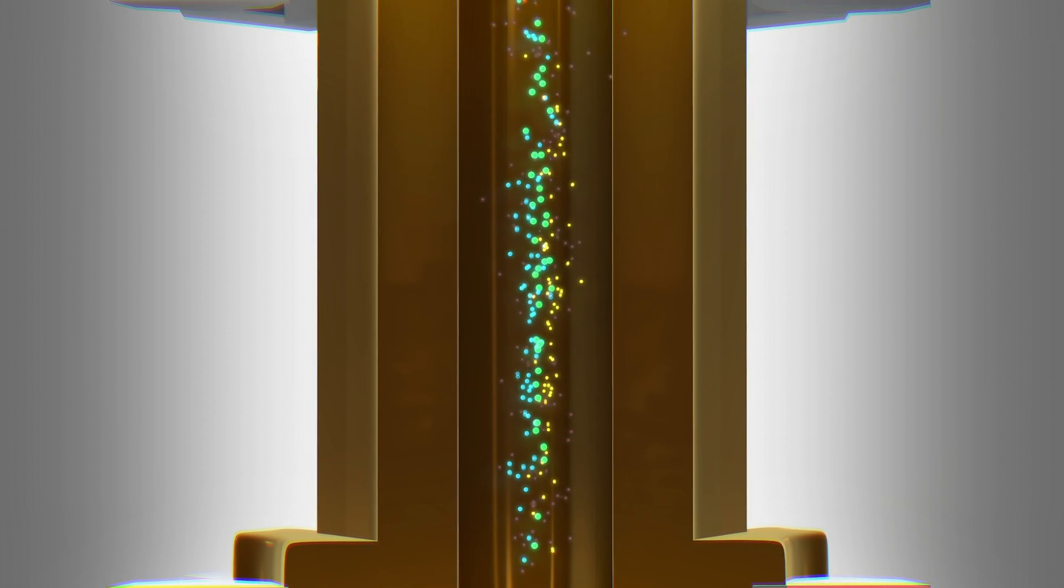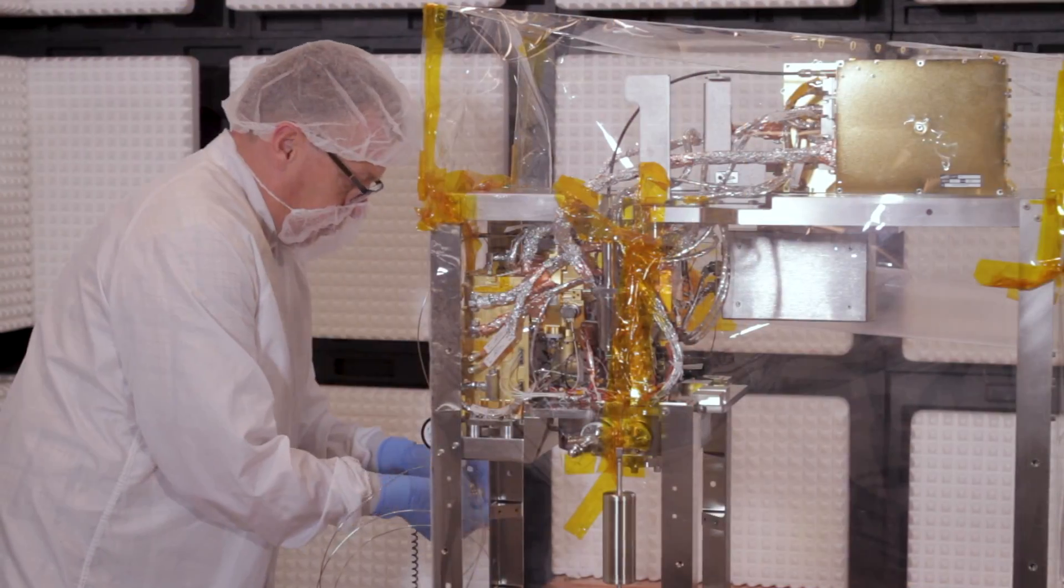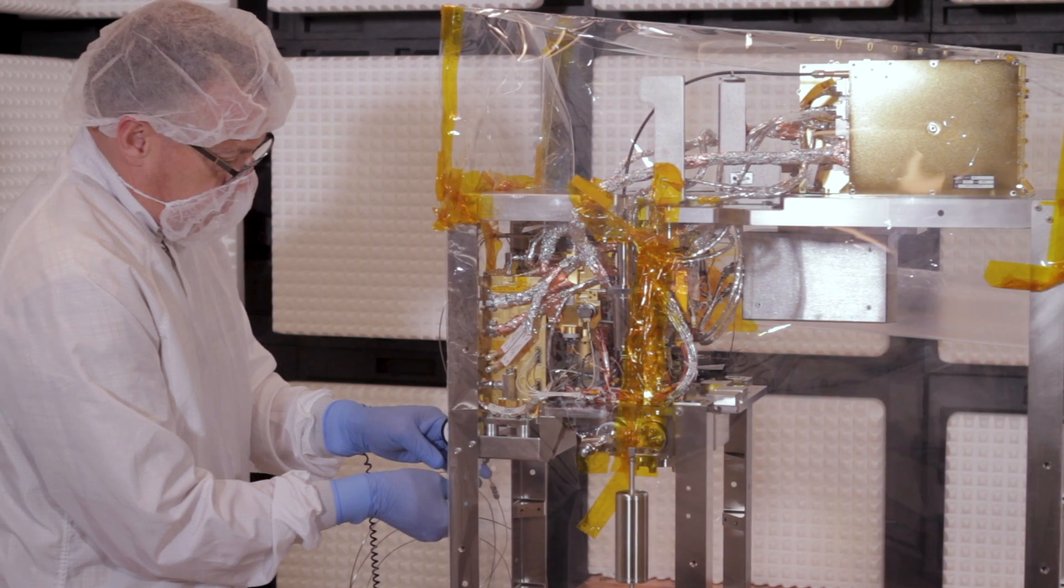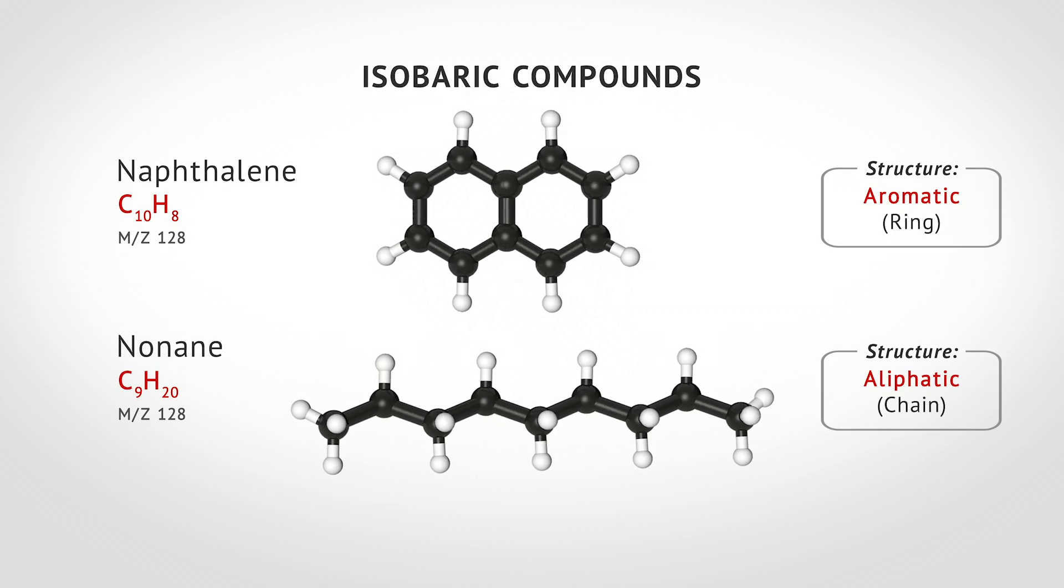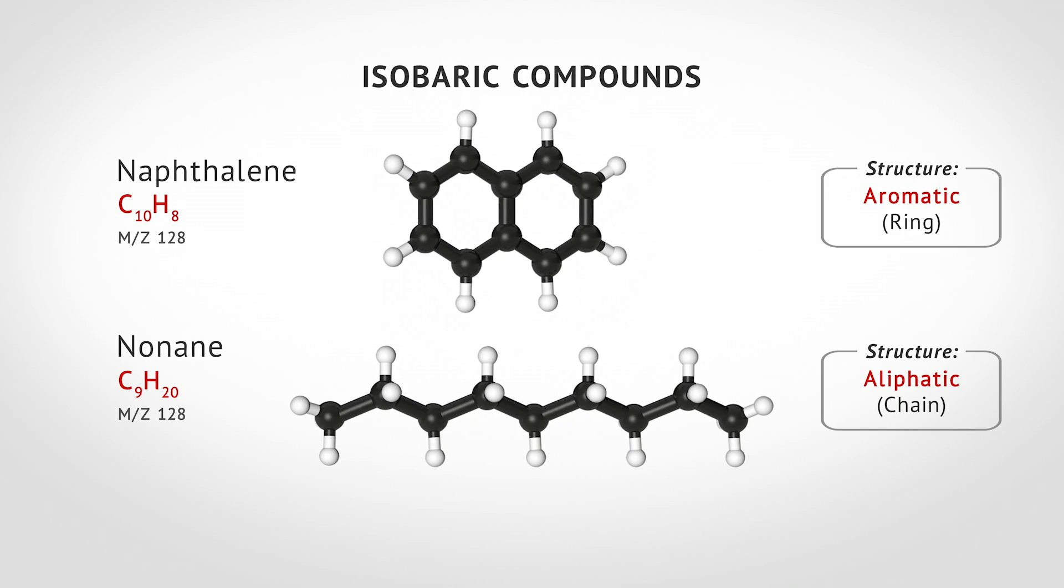Another technique is tandem mass spectrometry, or MS-MS, which identifies large molecules by breaking them apart and analyzing their fragments. By combining SWIFT and MS-MS, MOMA can determine an individual molecule's formula and its structure, both important criteria in the search for life.